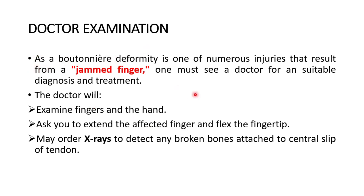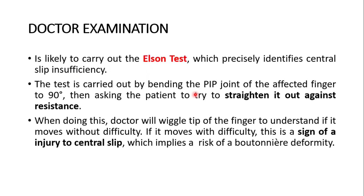Boutonnière deformity is one of numerous injuries that result from a jammed finger, so one must see a doctor for a suitable diagnosis and treatment. The doctor will examine the fingers and hand, ask you to extend the affected finger and flex the fingertip, and may order X-rays to detect any broken bones attached to the central slip. The doctor is likely to carry out the Elson test, which precisely identifies central slip insufficiency — performed by bending the proximal interphalangeal joint to 90 degrees, then asking the patient to straighten it against resistance while the doctor checks if the fingertip moves freely. Difficulty moving the fingertip is a sign of central slip injury and risk of Boutonnière deformity.